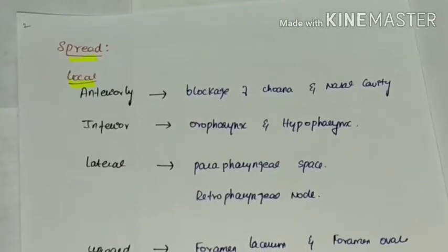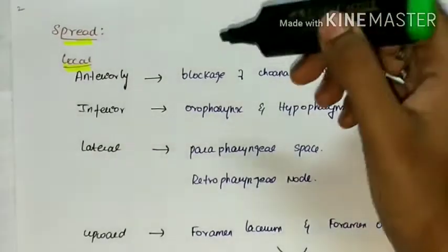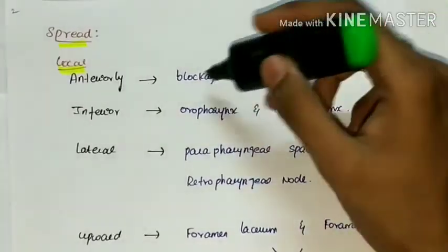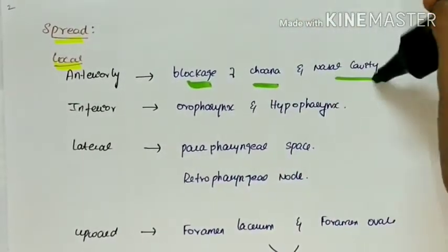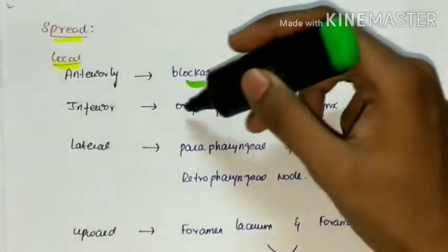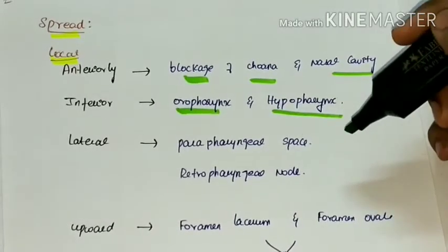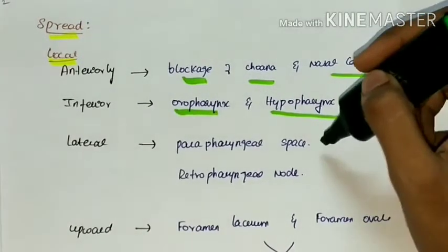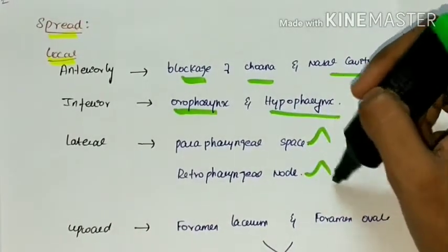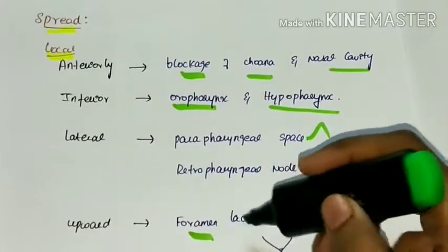As we've seen, the most common site is the fossa of Rosenmuller. From there it can spread anteriorly causing blockage of choana and nasal cavity. It spreads inferiorly leading to oropharyngeal and hypopharyngeal symptoms. Next it can spread laterally into the parapharyngeal space and retropharyngeal nodes, and also extends upwards into the foramen lacerum and foramen ovale.